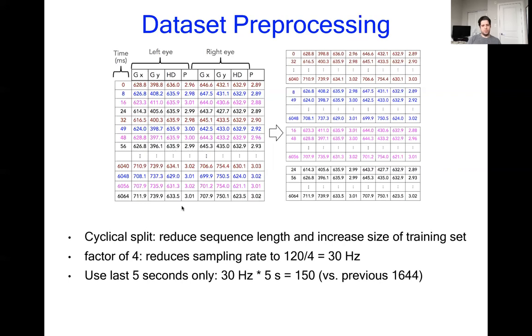Doing a cyclical split divides the length by four, and we also limit the interaction to the final five seconds, which gives us sequences of a maximum 150 steps, which is much more in line with what the RNNs are used for typically.